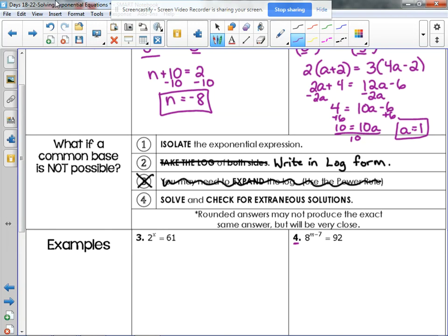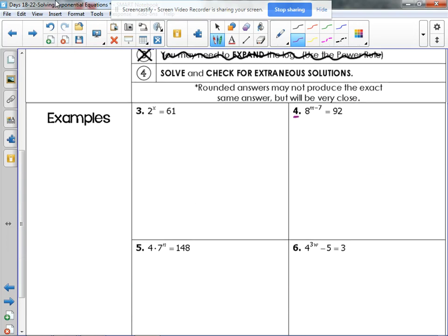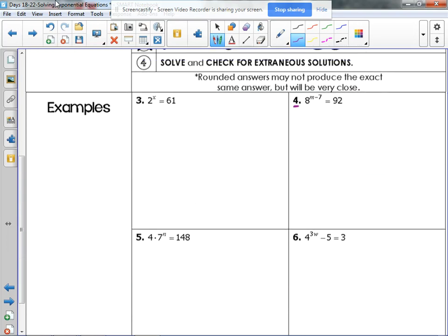So, the steps we're going to follow is we're going to isolate the exponential expression, we're going to write it in log form, and then we're going to solve and check for extraneous solutions. Now, I'm also going to show you another method to solve by graphing. That's also something that you can use, but I'm going to show you how to do it algebraically first.